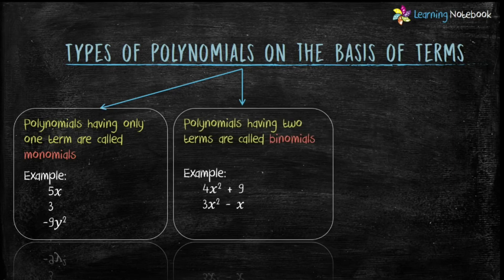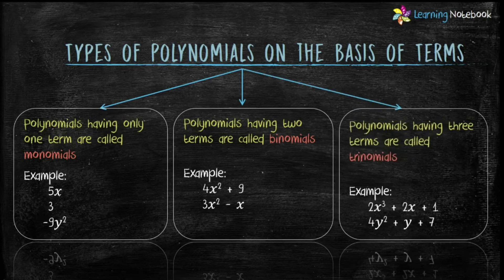Second is binomials. Polynomials having two terms are called binomials. For example, 4x squared plus 9, and 3x squared minus x — these two are binomials because they have two terms. And the last one is trinomials. Polynomials having three terms are called trinomials. For example, 2x cubed plus 2x plus 1, and 4y squared plus y plus 7 — these two are trinomials because they have three terms.